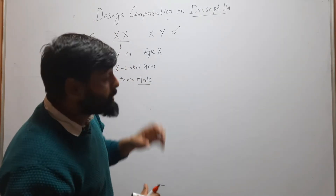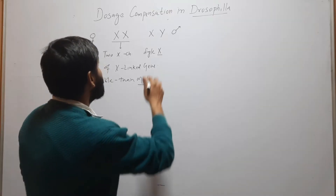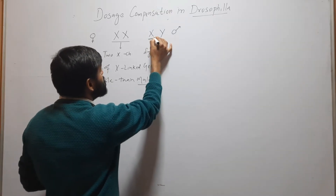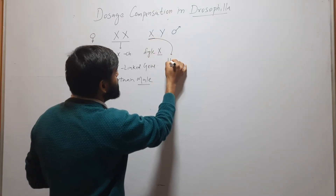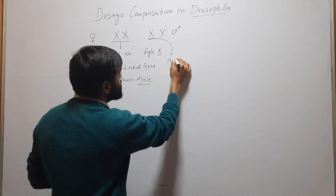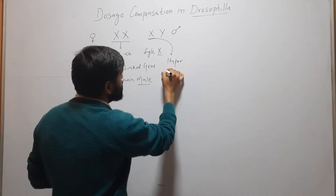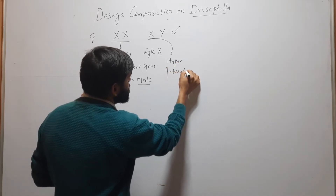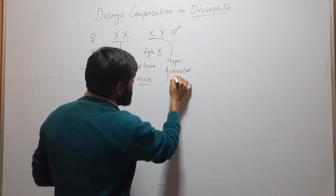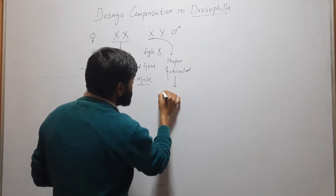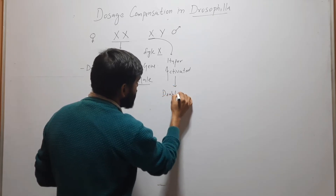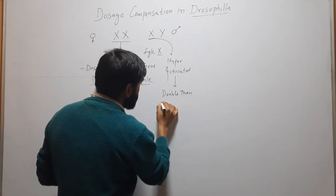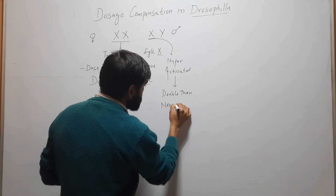Here in the case of Drosophila, this X chromosome is hyperactivated, and it will work double compared to a normal X chromosome.